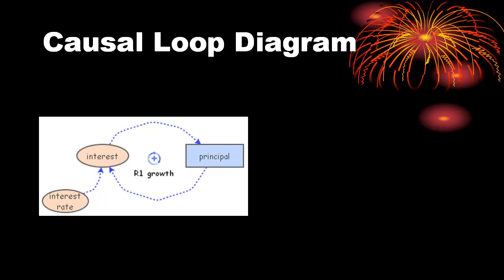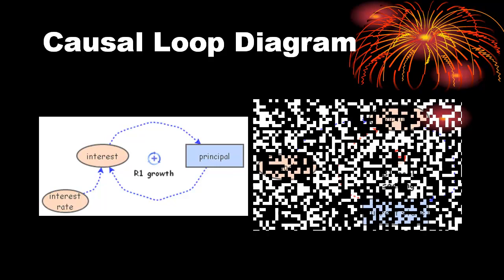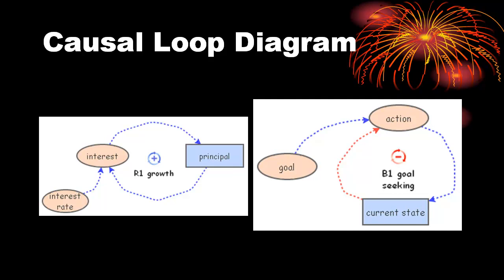The second causal loop diagram indicates that the current state of something interacts with the goal to provide the basis for action. The action then serves to move the current state in the direction of the goal, thereby decreasing the action in the next cycle. The negative loop in the center indicates this is a balancing or goal-seeking loop. Don't worry about the details as there is a separate video that provides details for creating causal loop diagrams.